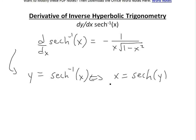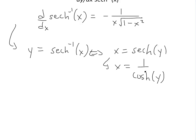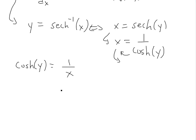We can further simplify before taking the derivative, since we'll use implicit differentiation. By definition, x equals 1 divided by hyperbolic cosine of y. If we switch these over — moving terms to each side and multiplying out — we get hyperbolic cosine of y equals 1 divided by x.